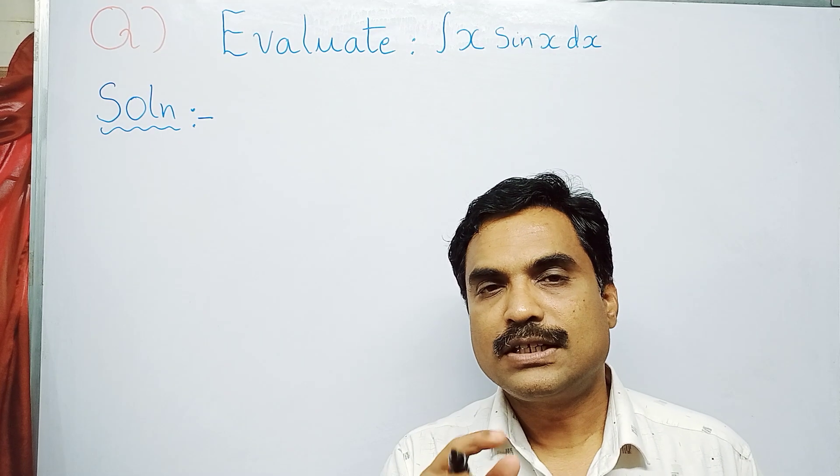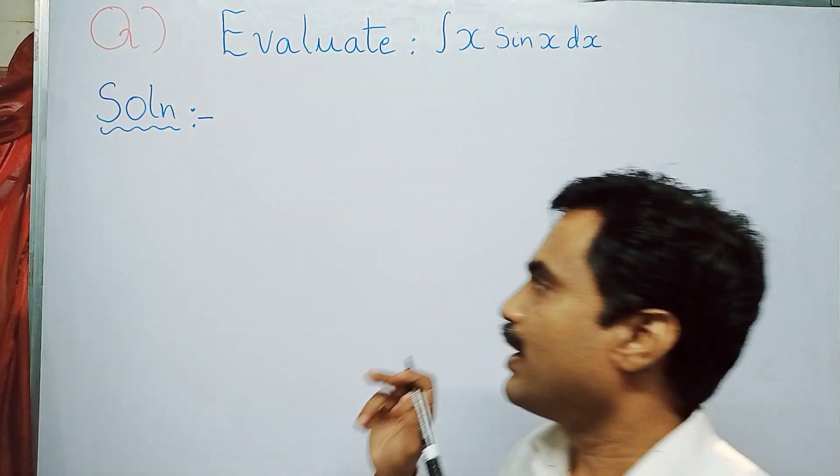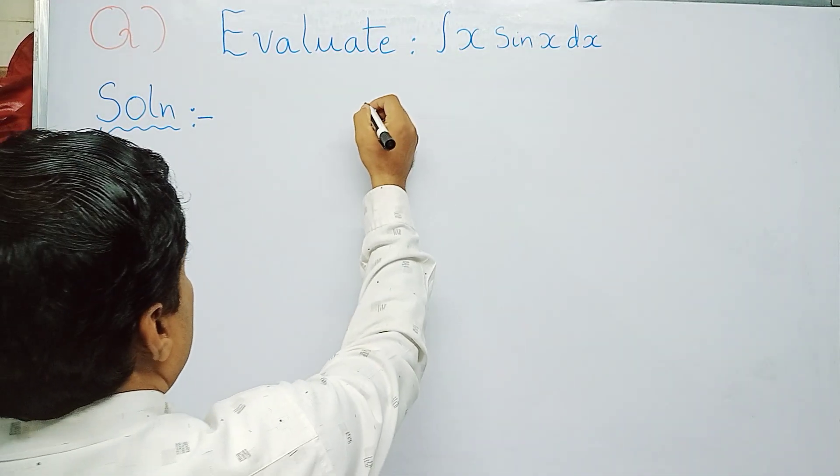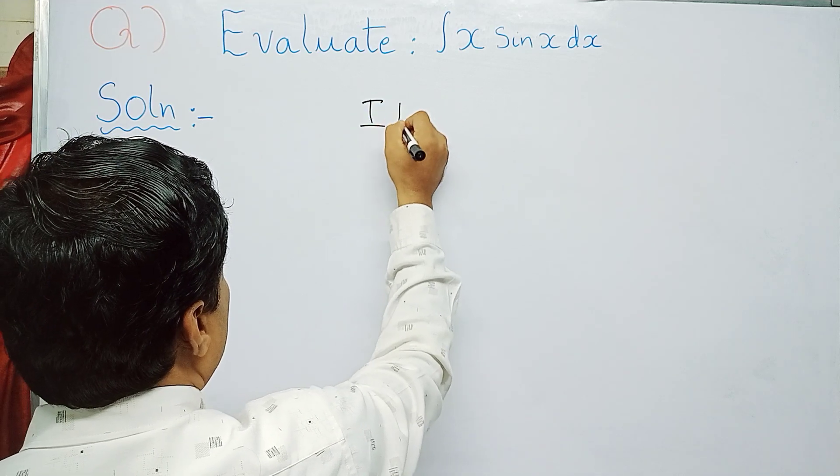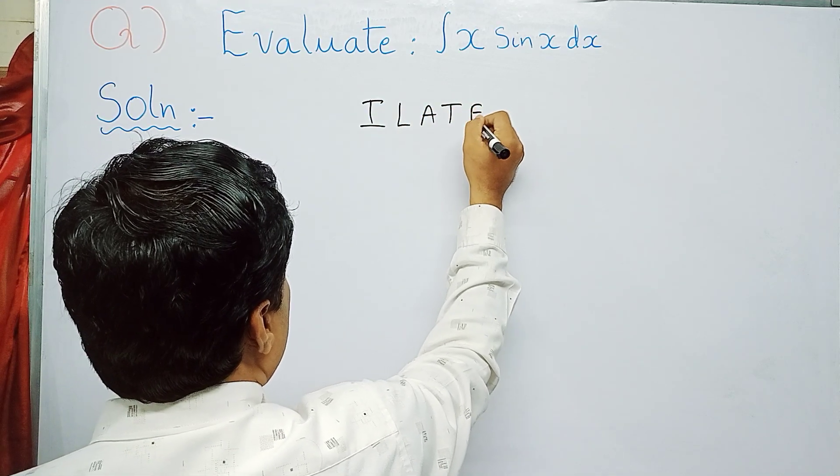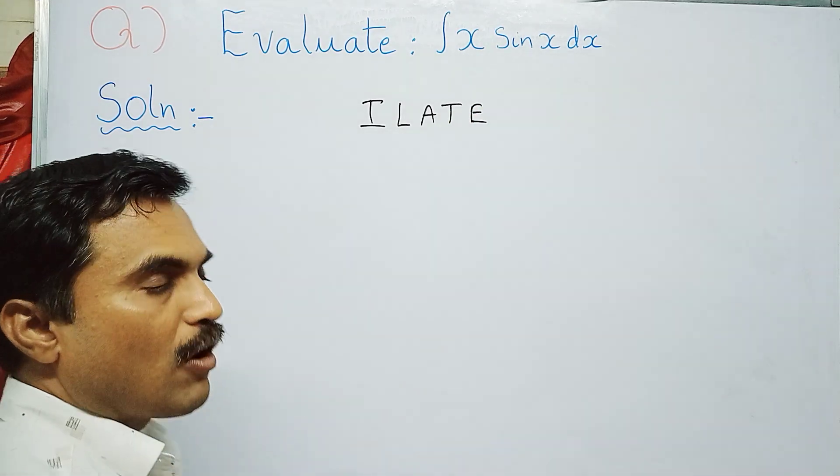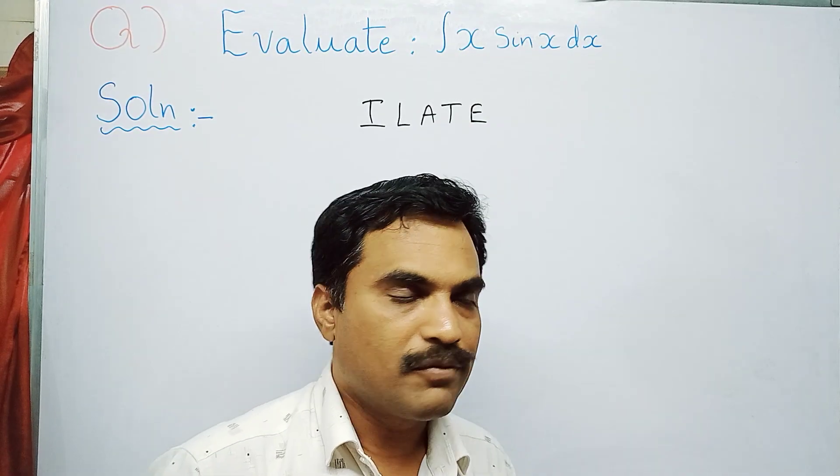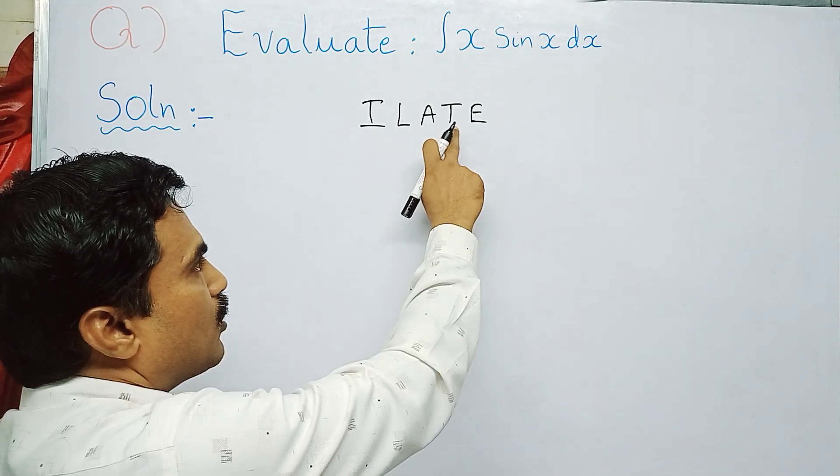Let me write the term ILATE. ILATE means: I stands for inverse trigonometry functions, L stands for logarithmic functions, A stands for algebraic functions, T stands for trigonometry functions, and E stands for exponential functions.